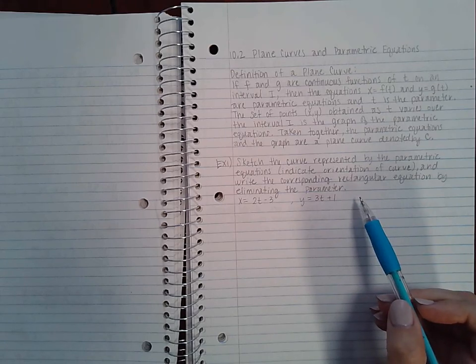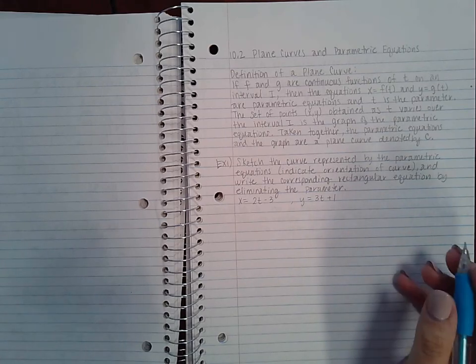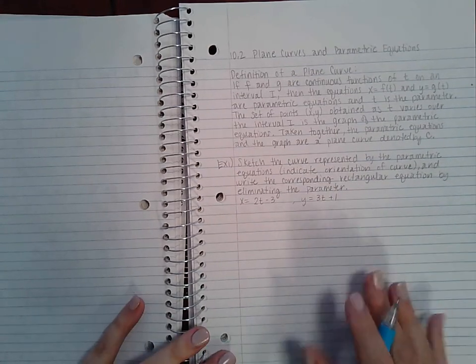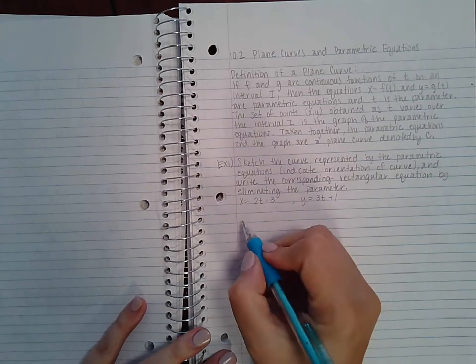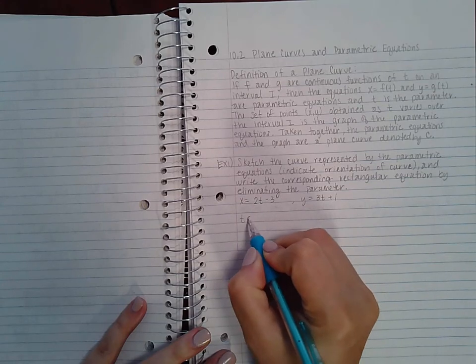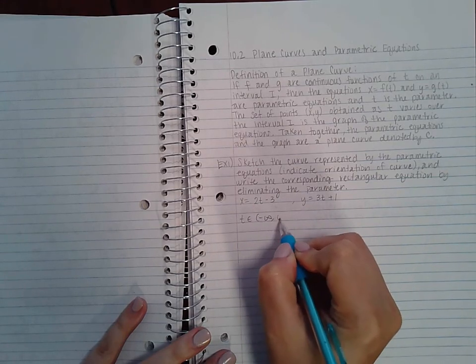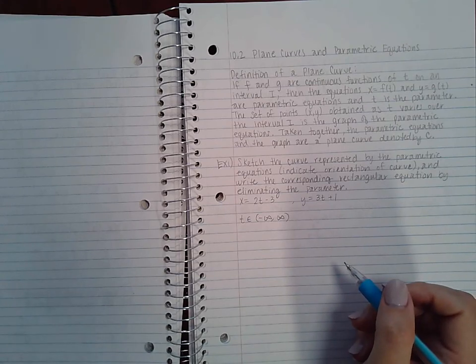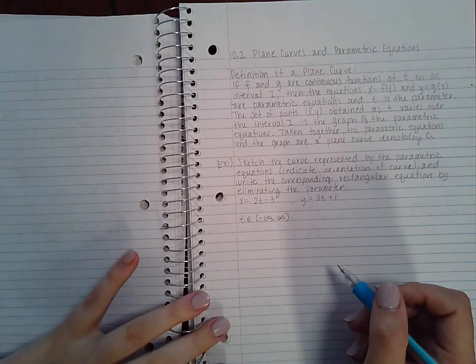t is between negative infinity and infinity. So we only need to use a couple of t values to figure out what's going on, and then that'll help us to graph and generalize with arrows. Let's start off with t = -1, then t = 0, t =